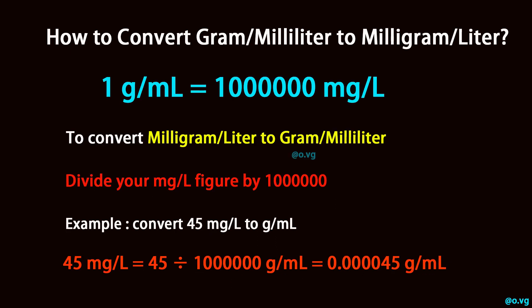To convert milligram per liter to gram per milliliter, divide your milligram per liter figure by 1 million. Example: convert 45 milligram per liter to gram per milliliter. 45 milligram per liter equals 45 divided by 1 million gram per milliliter, which equals 0.000045 gram per milliliter.